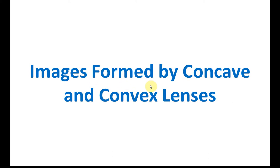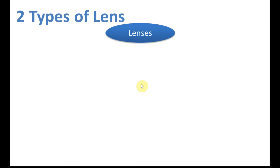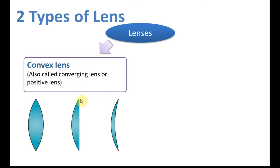We will be discussing images formed by concave lenses and convex lenses. The first type is called a convex lens. We can see that the sides of the convex lens are thinner than the center — the center is thicker. A convex lens is sometimes called a converging lens because it converges the light that passes through it, and sometimes it's called a positive lens because it has positive power.